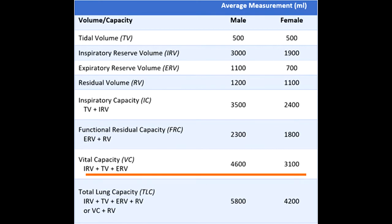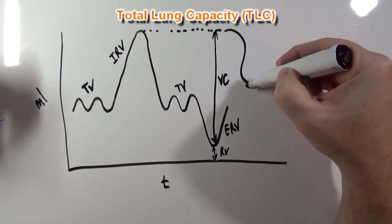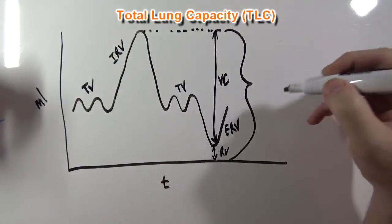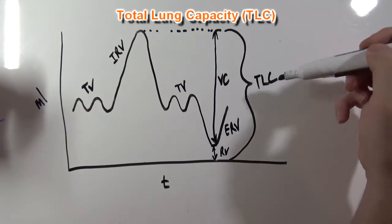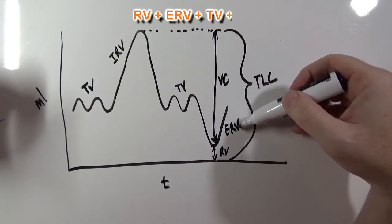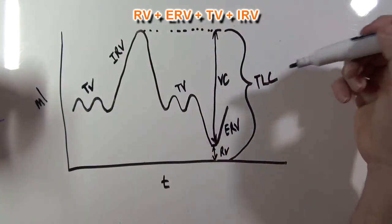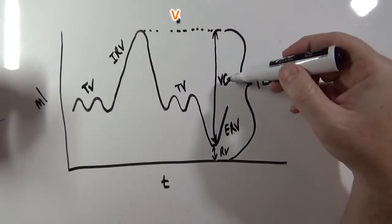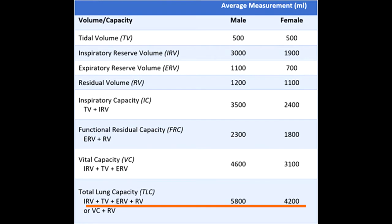The average vital capacity for a female is 3100 milliliters. Considering all of the volumes together, this would be total lung capacity. Total lung capacity is the sum of residual volume plus expiratory reserve volume plus tidal volume plus inspiratory reserve volume — or equivalently, vital capacity plus residual volume. The average total lung capacity for a male is 5800 milliliters, and for a female is 4200 milliliters.